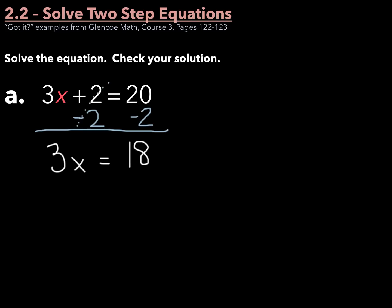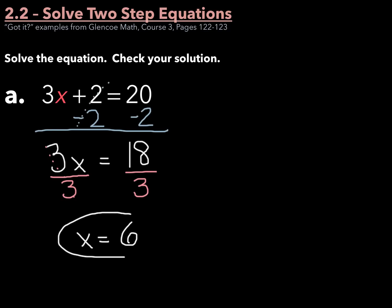Next, if I divide by 3 on both sides, 3 divided by 3 is 1, thus canceling out, and x is going to equal 6. So x equals 6 should be my solution to this equation.